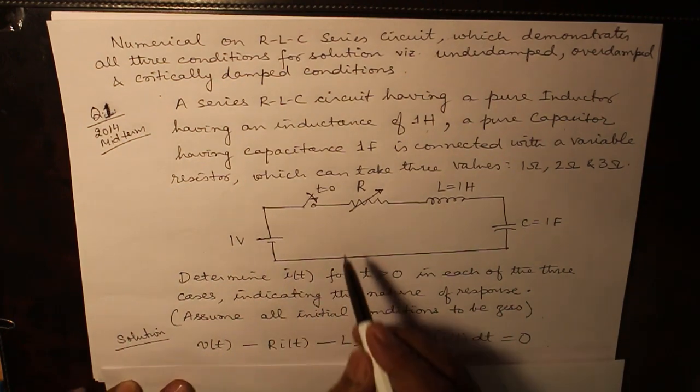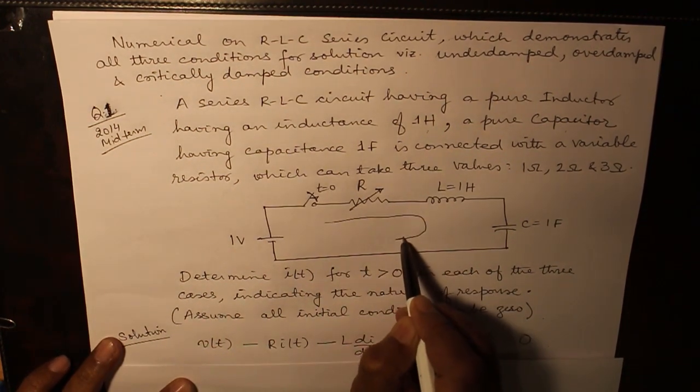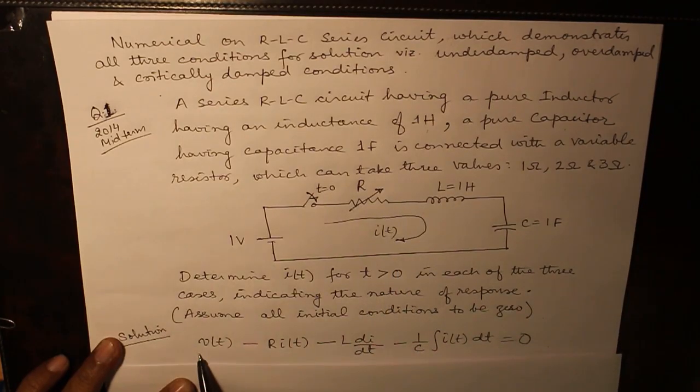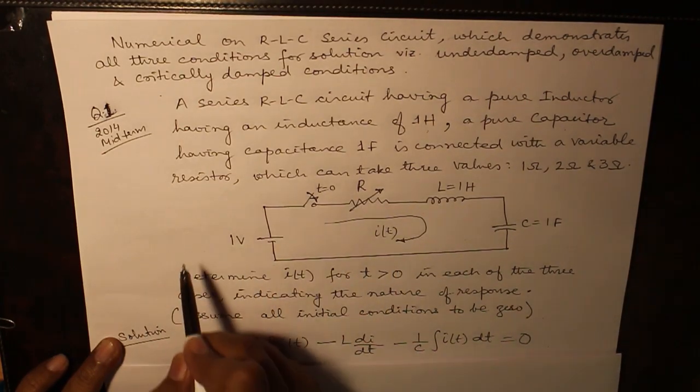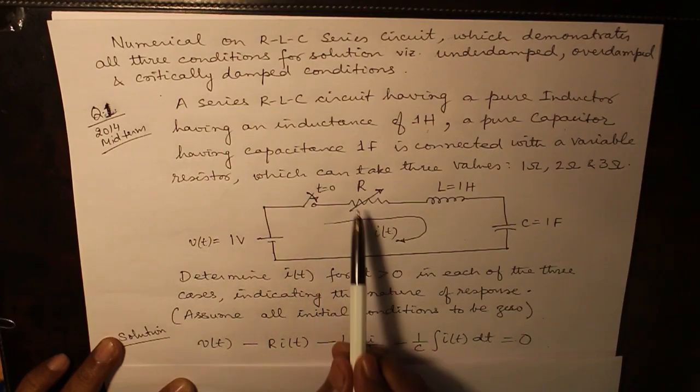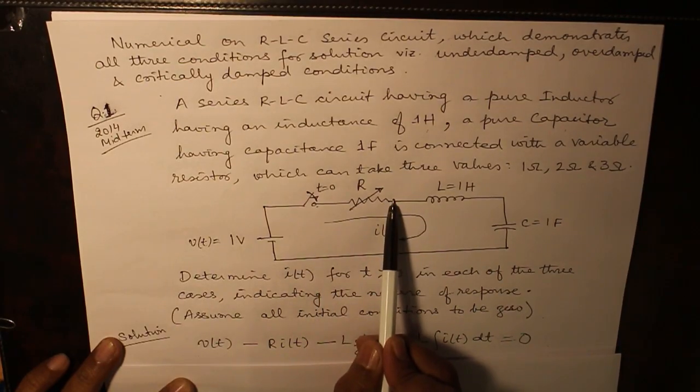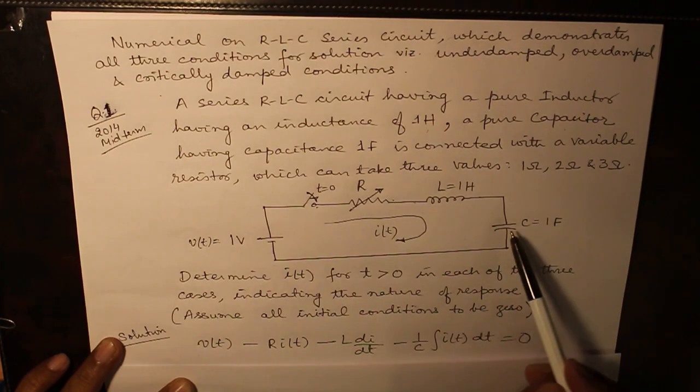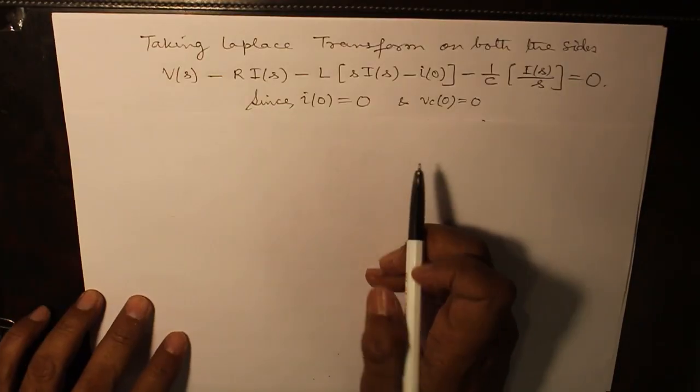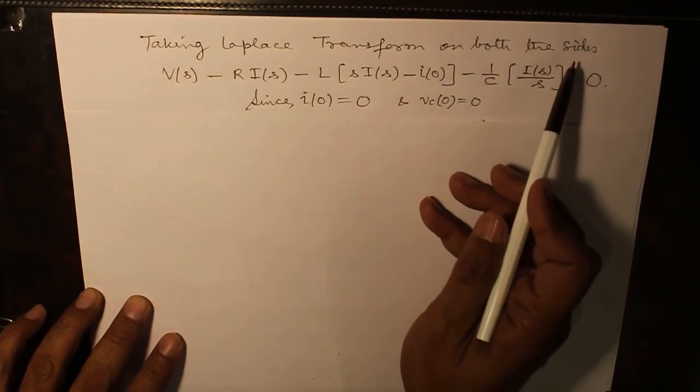The differential equation in this loop, the current I(t) is given by V(t) minus R*I(t) drop across resistor minus L*di/dt drop across inductor minus 1 over C integral I(t)dt drop across the capacitor. Taking Laplace transform on both the sides.